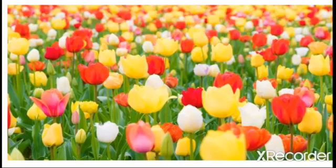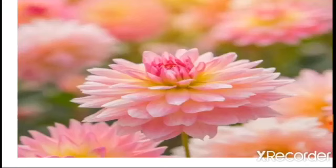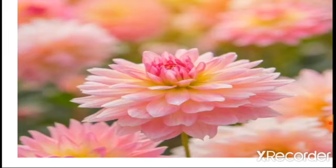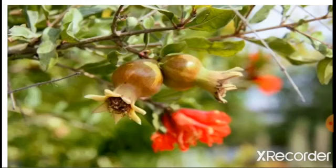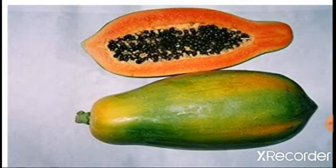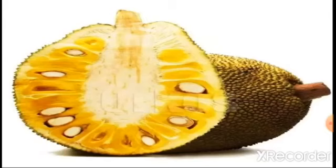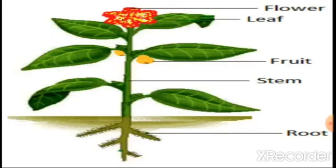We know why root, stem, and leaves are vegetative plant parts. Now, why are flowers the reproductive part of a plant? Because the flower is the part where reproduction occurs in plants. Flowers grow into fruits — for example, the pomegranate flower grows into a fruit, and the fruit contains seeds. In papaya fruit, it also contains seeds. A seed germinates to grow into a new plant.